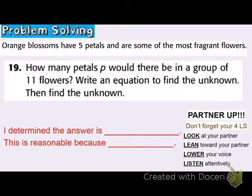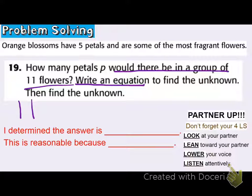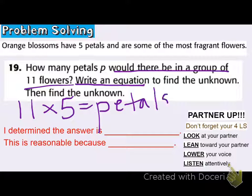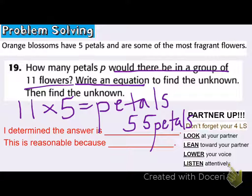We're now on problem 19 — still talking about orange blossoms with five petals. How many petals would there be in a group of 11 flowers? Write an equation to find the unknown and then find it. I have 11 flowers, and all of those flowers have five petals each. If I multiply 11 times 5, I figure out how many petals there are. I know 11 times 5 is 55 — the answer is 55 petals. It's reasonable because 11 times 5 is 55, or 55 divided by 11 would be five petals on each. I can check it with that fact family.